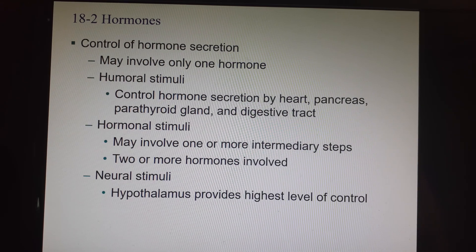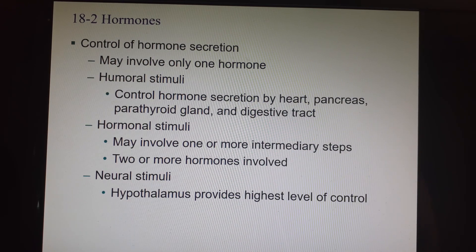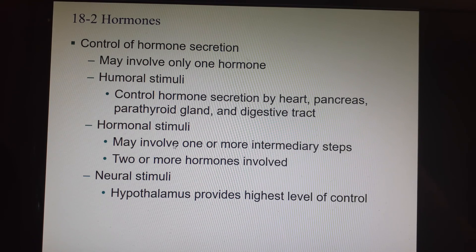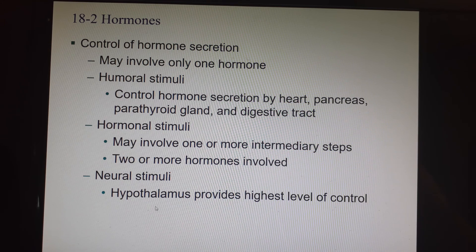Control of hormone secretion by humoral stimuli involves the heart, pancreas, parathyroid gland, and digestive tract directly — those endocrine cells directly monitor the extracellular fluid, and when they detect a change, that is when they will release their hormone. Hormonal stimuli usually has one or two more intermediary steps with at least two hormones involved. And in neural stimuli, the hypothalamus is actually running the show.